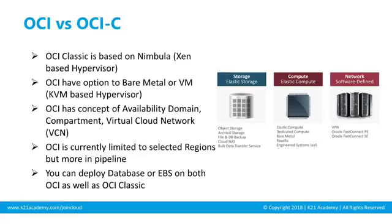OCI is next generation infrastructure, or gen 2 as Oracle calls it. OCI stands for Oracle Cloud Infrastructure and is next-gen, whereas OCI Classic is the older generation 1 infrastructure. OCI Classic was built on a Nimbula software, which runs on a Xen-based hypervisor. A newer hypervisor — KVM-based — has since come along. OCI used to be called Bare Metal Cloud Service (BMCS), and at Oracle OpenWorld in October 2017, it was rebranded to OCI, running on a KVM-based hypervisor.